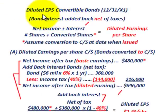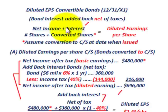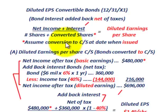Let's look at diluted earnings per share for convertible bonds at the end of year X1. The general formula is: take net income for the year, add back the interest expense, then divide by the number of shares outstanding for the year plus the shares that would be issued from bond conversion. We assume conversion as of the date the bonds were issued — in this case, the beginning of the year.